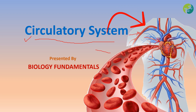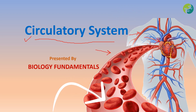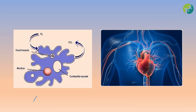When it comes to simple organisms such as amoeba, diffusion is enough to circulate or transport materials across the body, because the material has to travel only shorter distances. As you can see, this is the smallest organism, and the oxygen or food supply has to travel for shorter distances, so diffusion is sufficient for circulation.